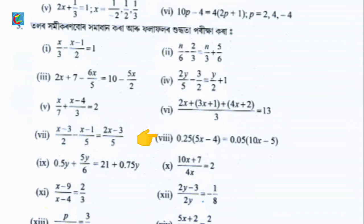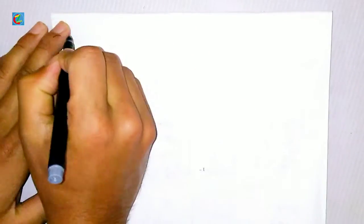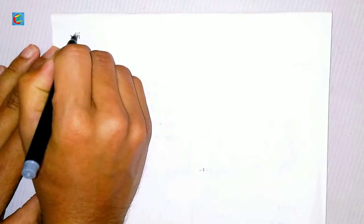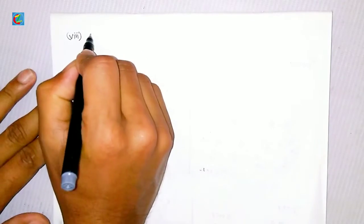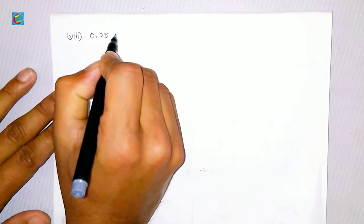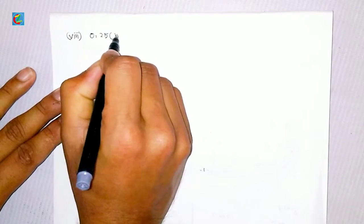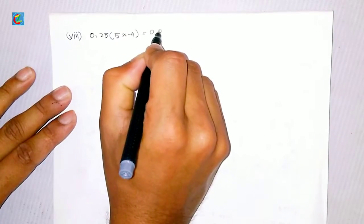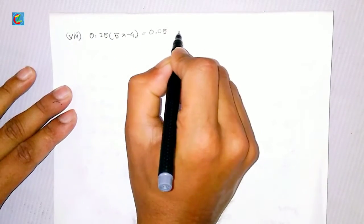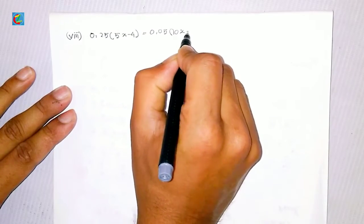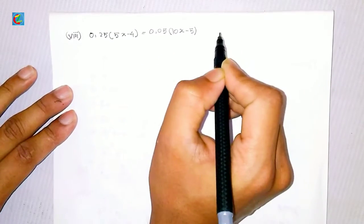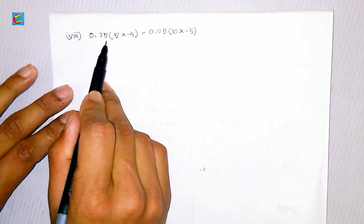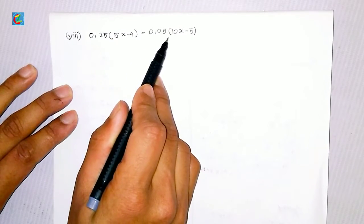I will put a check here. We can write this here. The next number question is: 0.25 times 5x minus 4 is equal to 0.05 times 10x minus 5.